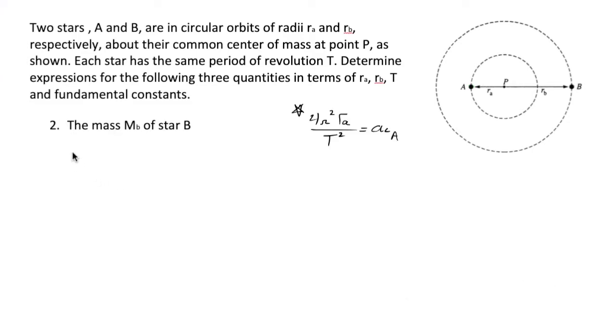Here in part 2, we are asked for the mass MB of star B. I've gone ahead and written down the centripetal acceleration of star A from the previous part. And what I'm going to do is work from the perspective gravitationally of star A. If you choose to switch perspectives and work on star B instead, that's perfectly fine. But since this is what we have, let's go ahead and consider a free body diagram on star A.